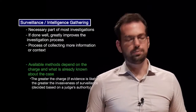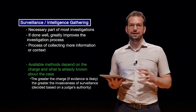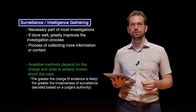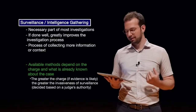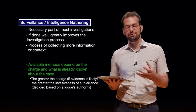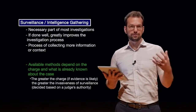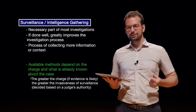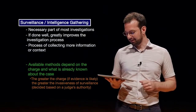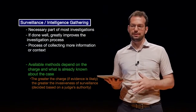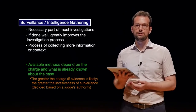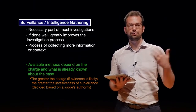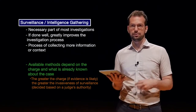Available methods depend on the charge and what is already known about the case. Intelligence gathering, especially surveillance, is in most countries very difficult for law enforcement to do — they have to get permission, usually from a judge or prosecutor, to do any type of invasive surveillance. If the charge is something like terrorism and they can show any type of evidence that terrorism is actually the case, they're more likely to get permission to do surveillance. The greater the charge, if evidence is likely, the greater the invasiveness of surveillance that is possible.